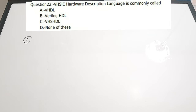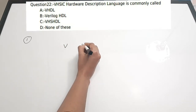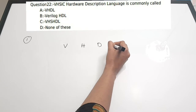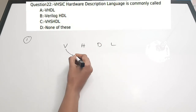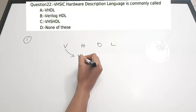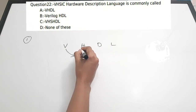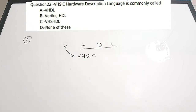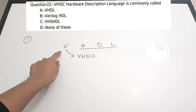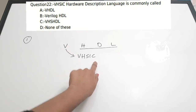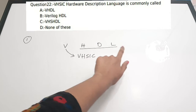The first question is: VHSIC hardware description language is commonly called — A) VHDL, B) Verilog HDL, C) VHS HDL, D) None of these. The correct answer is VHDL. If you see the expansion of VHDL, V stands for VHSIC and it is Hardware Description Language.